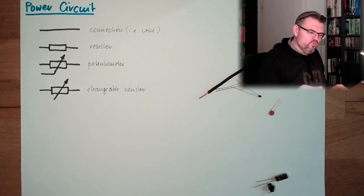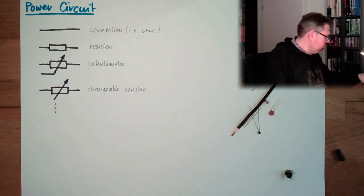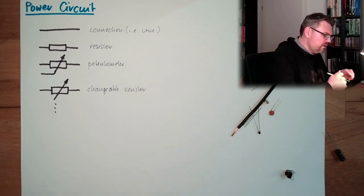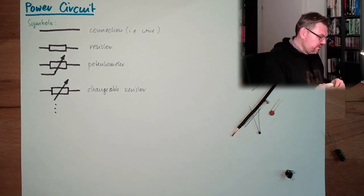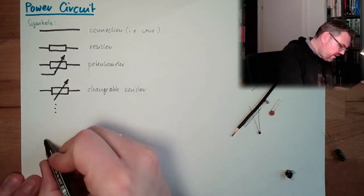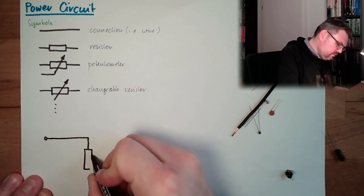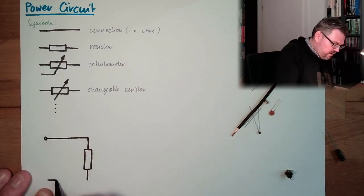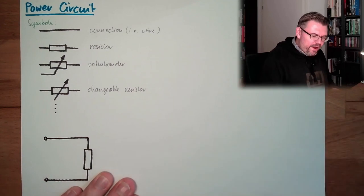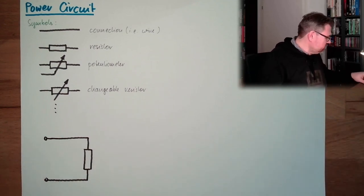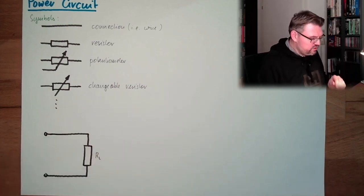So we are using symbols to draw our power circuits. Let's say we have somewhere a connector, then we have a piece of wire, then we have a resistor, then we have a piece of wire again, then we have a connector.